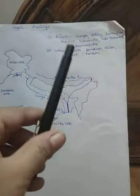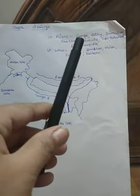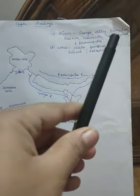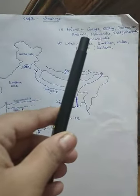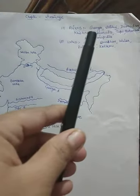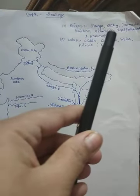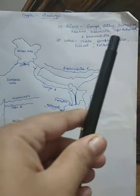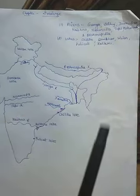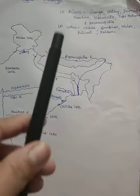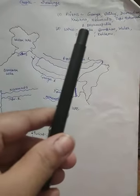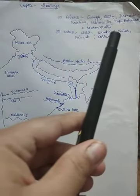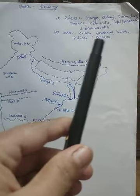We will mark the following rivers: Ganga, Satluj, Damodar, Krishna, Narmada, Tapi, Mahanadi, and Brahmaputra. And for lakes: Chilika, Sambar, Wular, and Pulikat or Koleru.